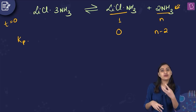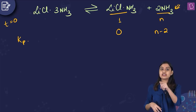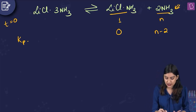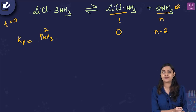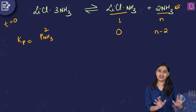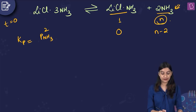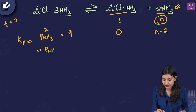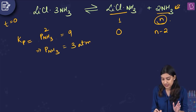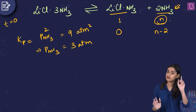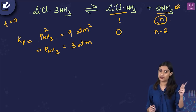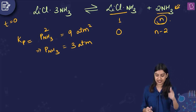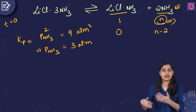Since NH3 is the only gas, everything else is solid and doesn't contribute to Kp. So Kp = (partial pressure of NH3)². With Kp = 9, taking the square root gives partial pressure of NH3 = 3 atm. Using PV = nRT with P = 3 atm, V = 24.63 L, R ≈ 0.0821 L·atm/mol·K (≈ 1/12), and T = 300 K, we can solve for n.